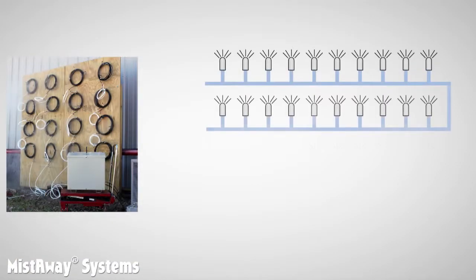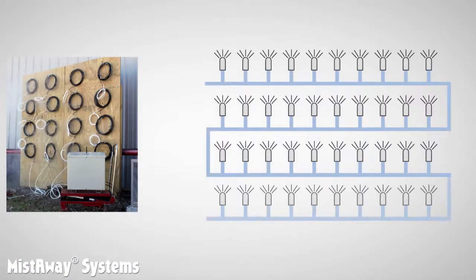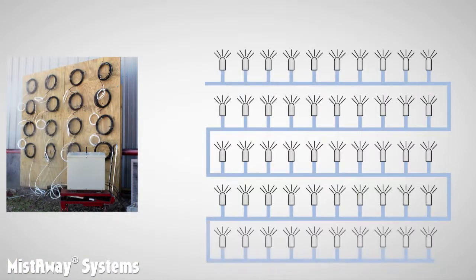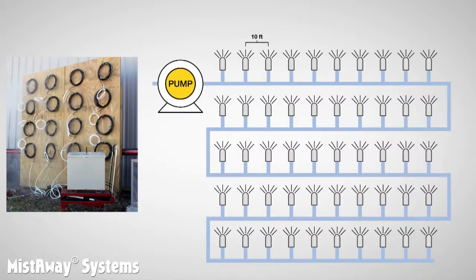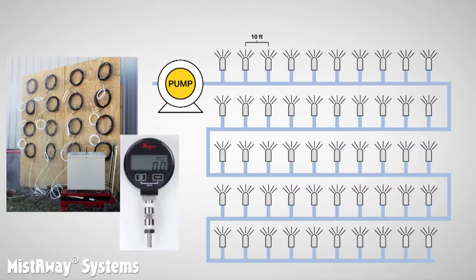To build our understanding, we strung 50 nozzles in series, one after the other with no branches. Between each nozzle, we placed 10 feet of quarter-inch tubing, which is pretty standard length between nozzles in an actual installation. We then hooked this nozzle circuit up to a pump and set the pressure to 250 psi. Next, we took a very accurate digital pressure gauge and measured the pressure at every fifth nozzle.